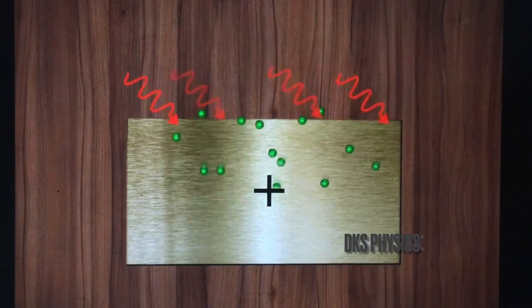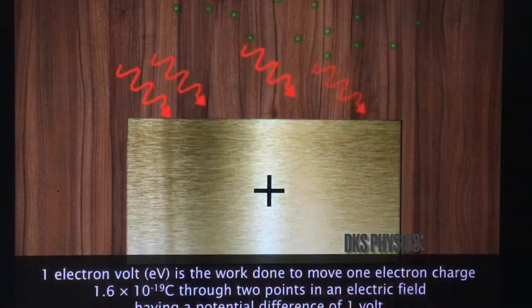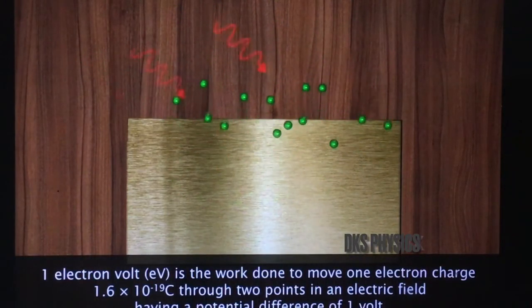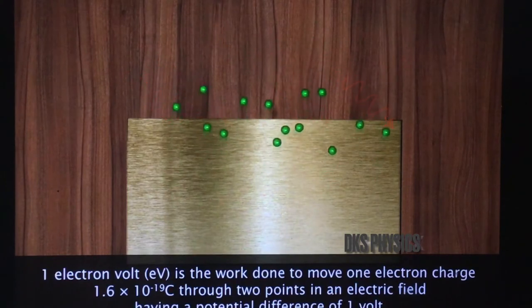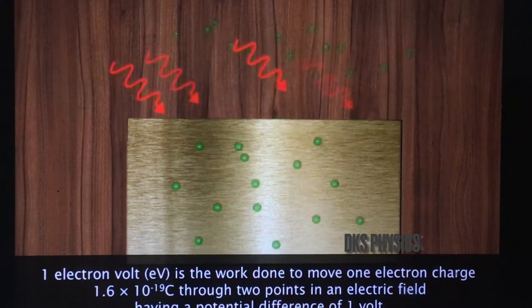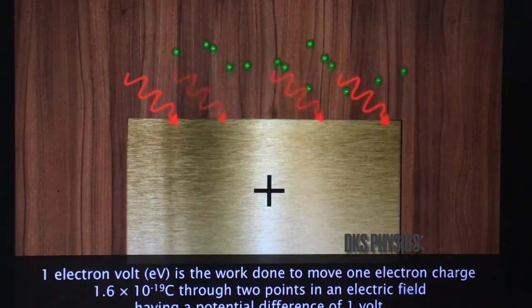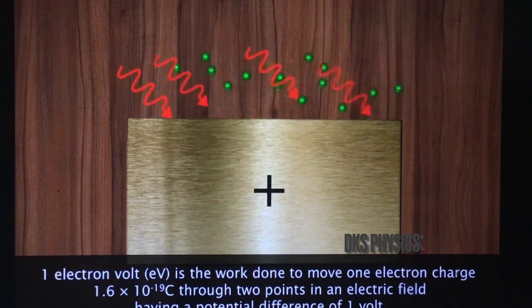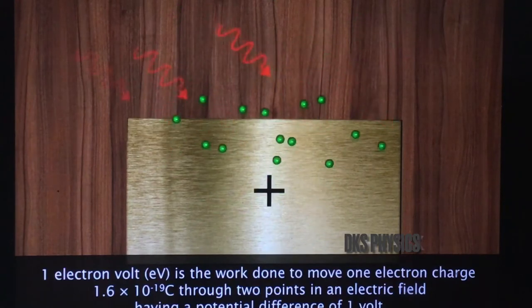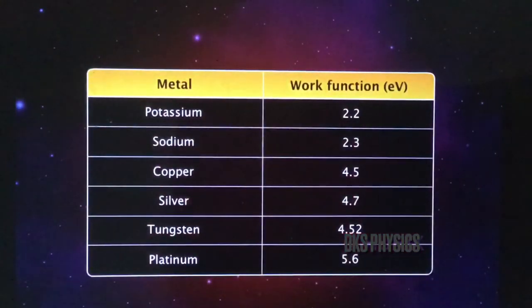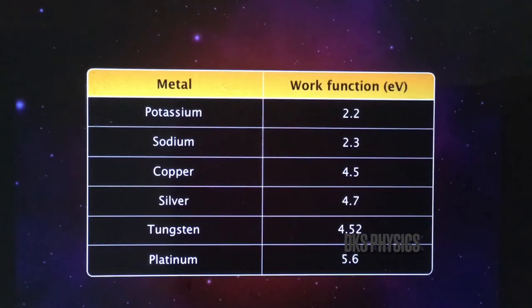The minimum energy required by a free electron to leave the surface is called work function phi. Work function is measured in electron volts. One electron volt is the work done to move one electron charge (1.6 × 10⁻¹⁹ coulombs) through two points in an electric field having a potential difference of one volt. The work functions of a few metals range from two to six electron volts.